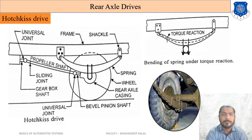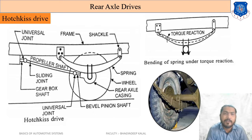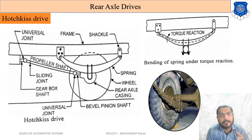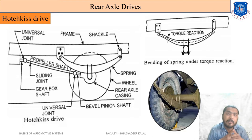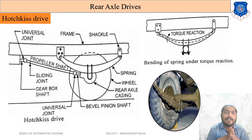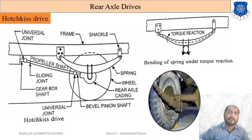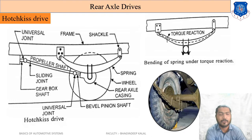To bear these four types of load, various designs exist. Two main designs are used in vehicles. The first is the Hotchkiss type of drive, which is very important from an exam point of view. The second is the torque tube type drive.